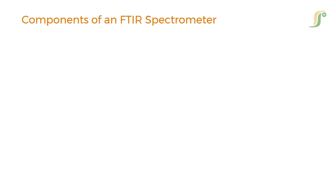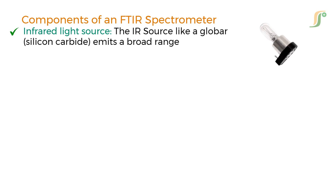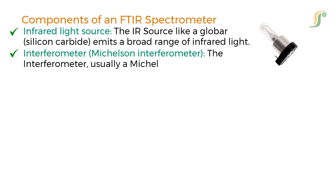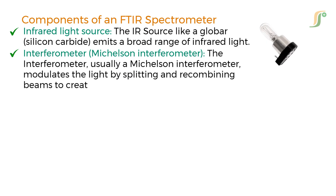Before understanding the principle, let us know the components of an FTIR spectrometer. The first one is the Infrared Light Source. The IR source, like a globar, made up of silicon carbide, emits a broad range of infrared light. The second component is the Interferometer, also known as the Michelson Interferometer. The interferometer modulates the light by splitting and recombining beams to create an interference pattern.